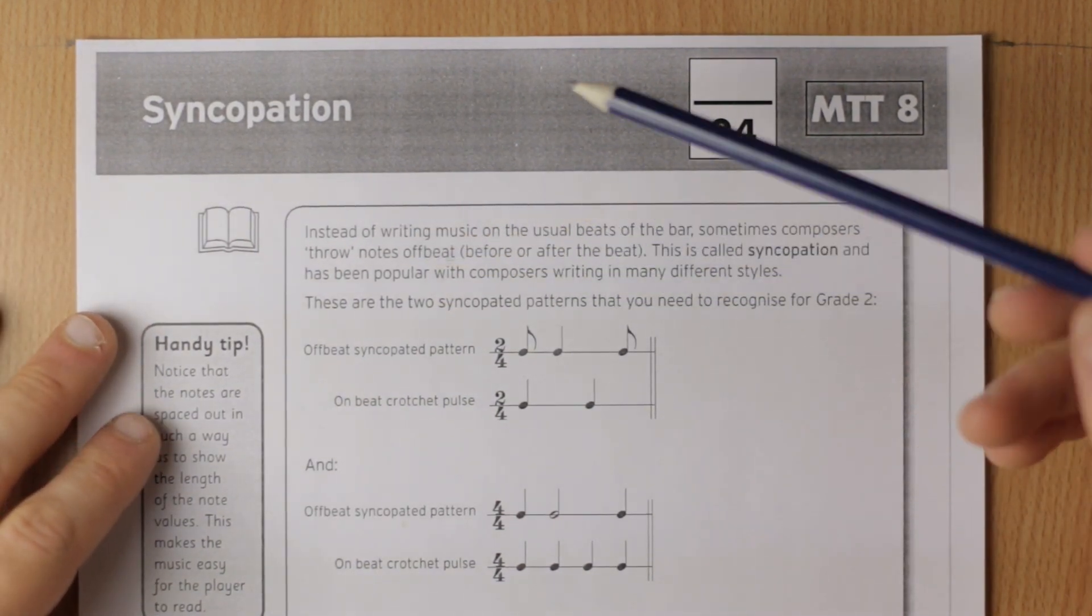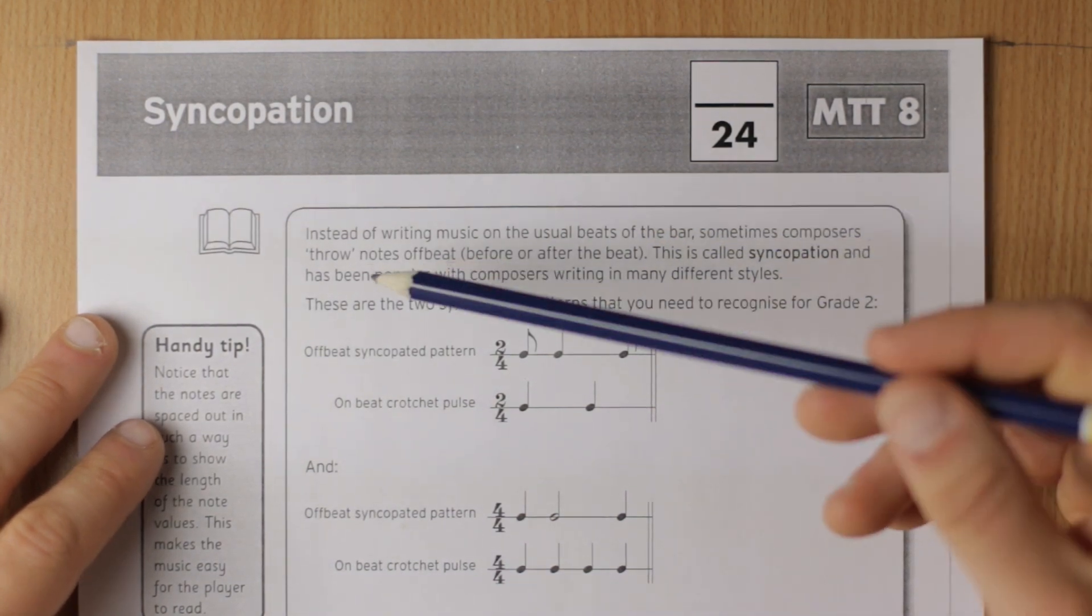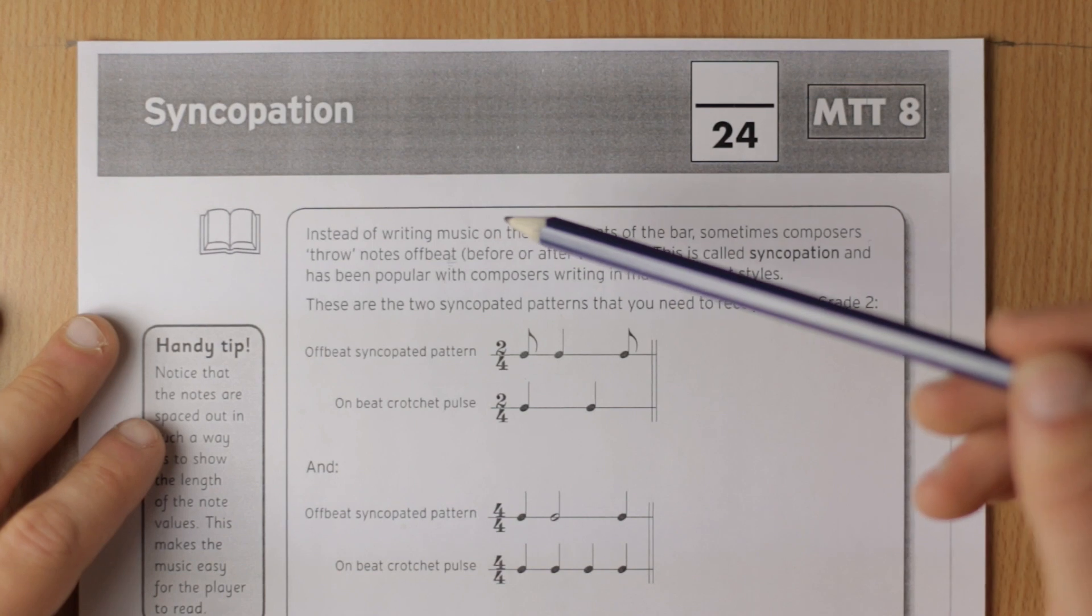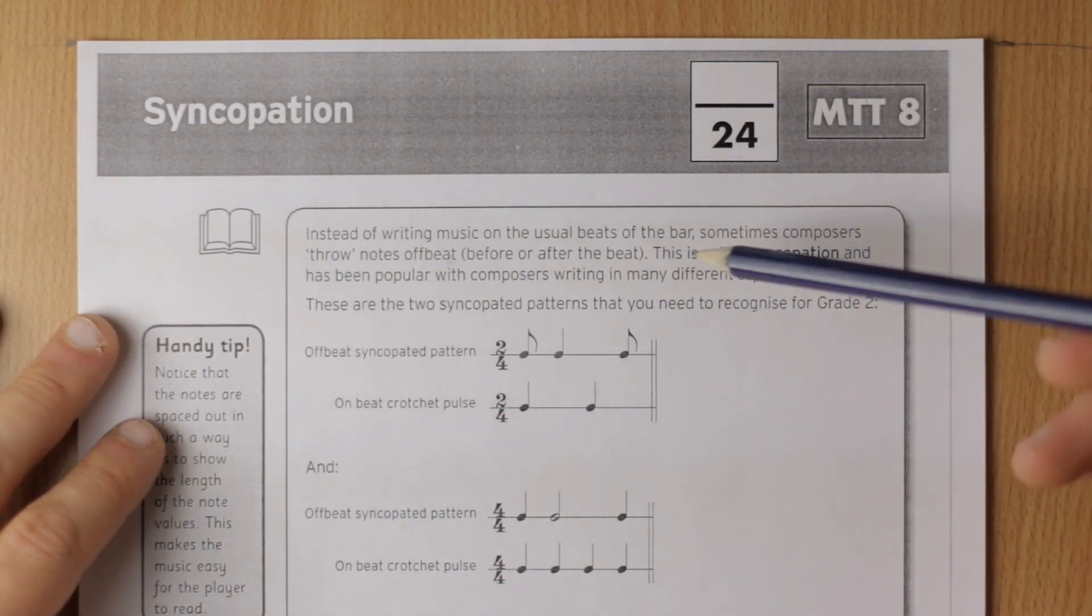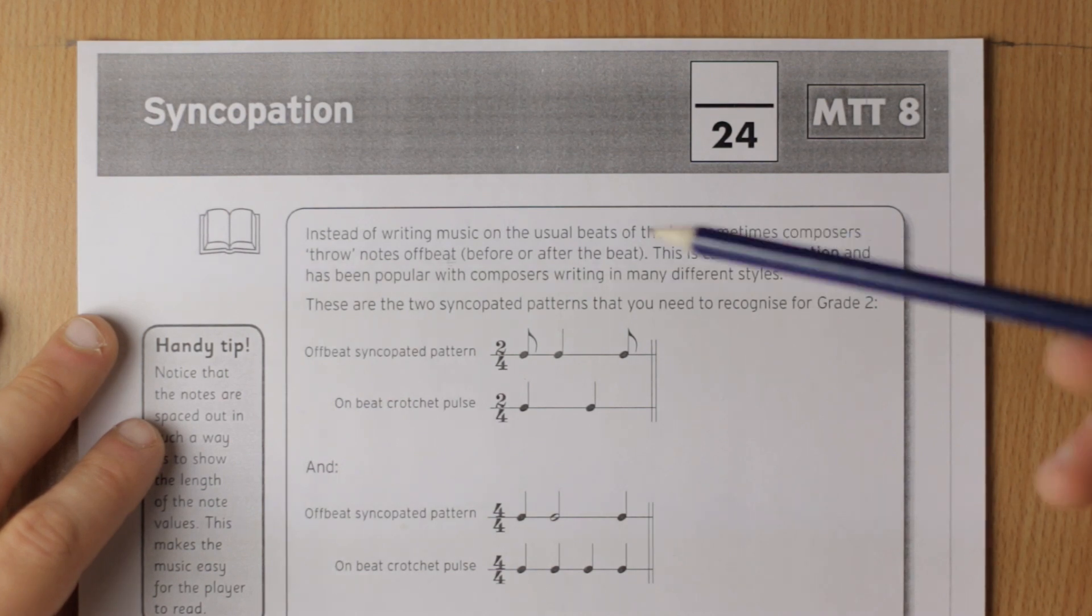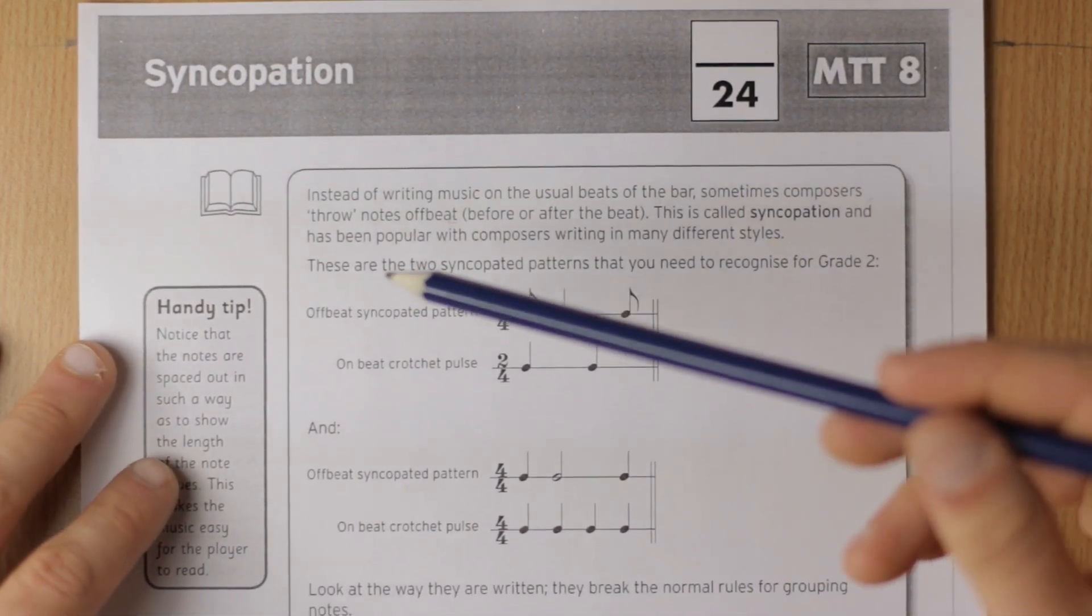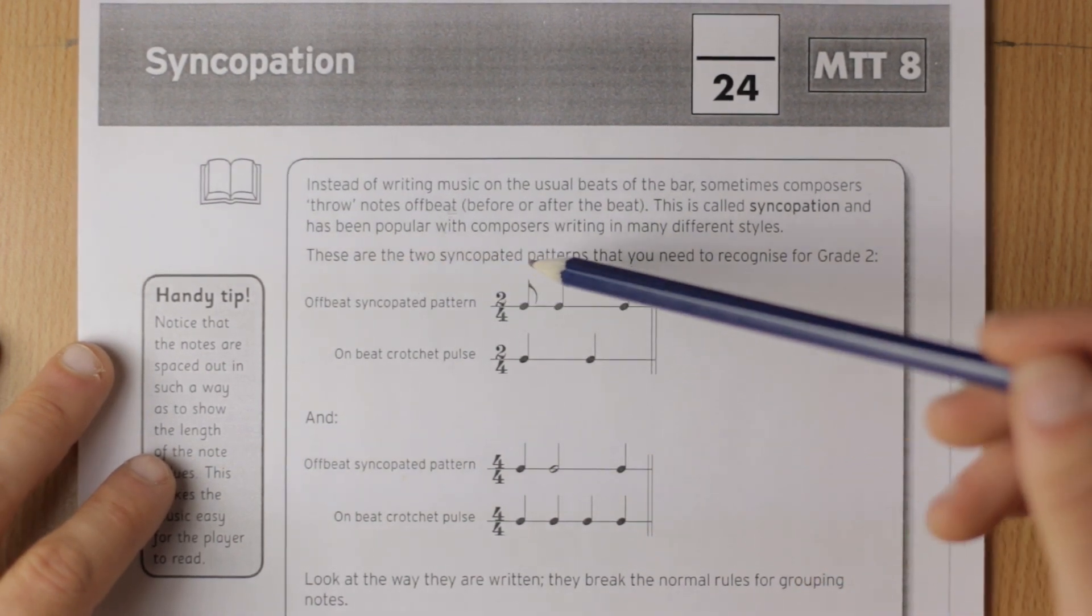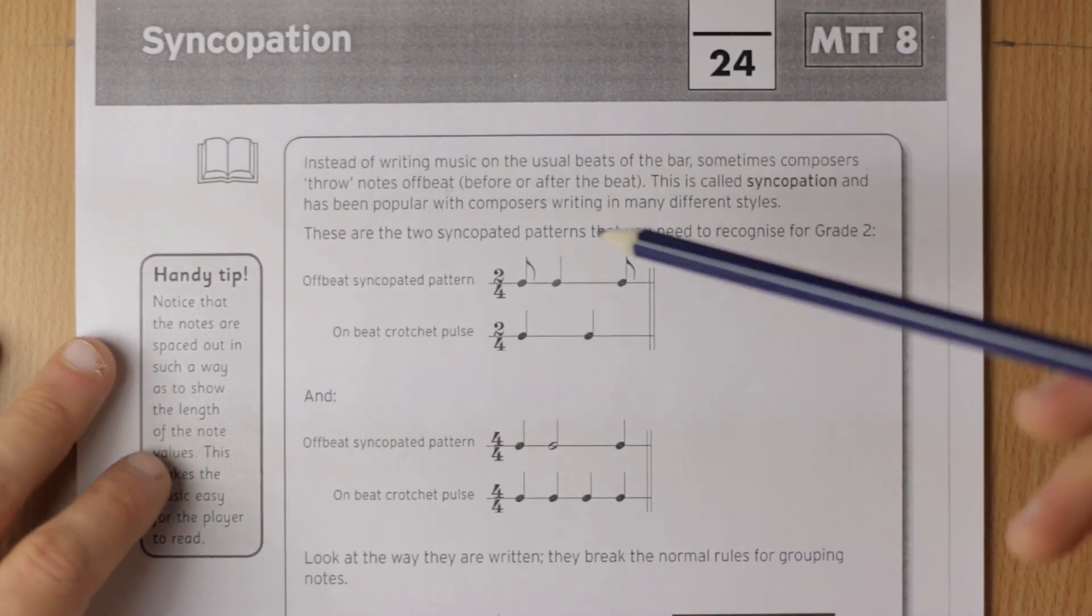Instead of writing music on the usual beats of the bar, sometimes composers throw notes offbeat before or after the beat. This is called syncopation and it's been popular with composers writing in lots of different styles. These two syncopated patterns below are things you need to recognize in grade two.